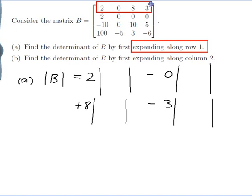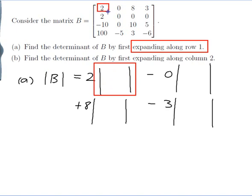To find those 3x3 determinants, you go back to your original matrix. To find the first one, I look at the 2 in the first row, cross out the row and column that I'm in, and the remaining matrix goes in this position. So that gives: 0, 0, 0 / 0, 10, 5 / minus 5, 3, minus 6.